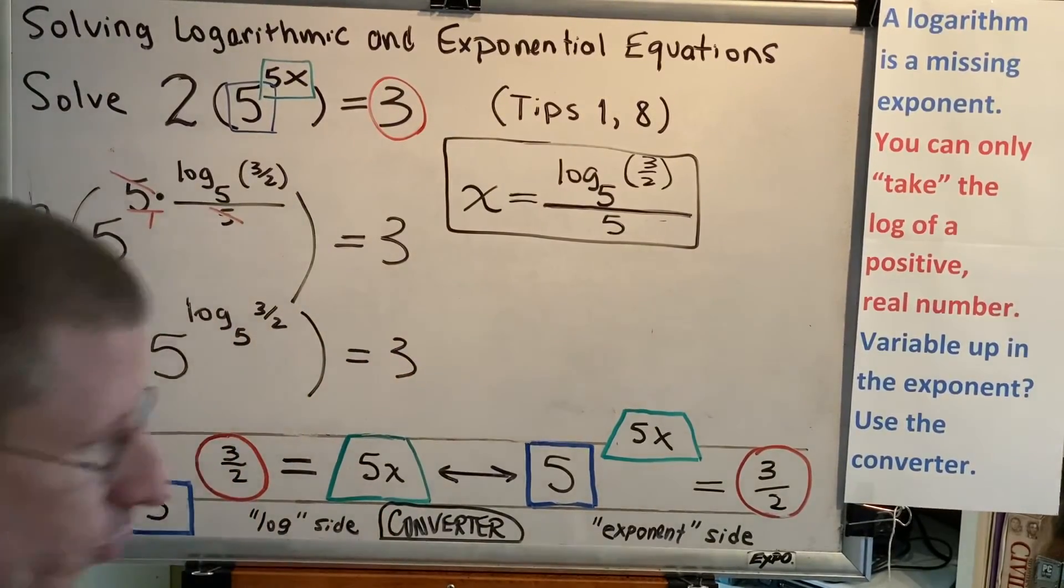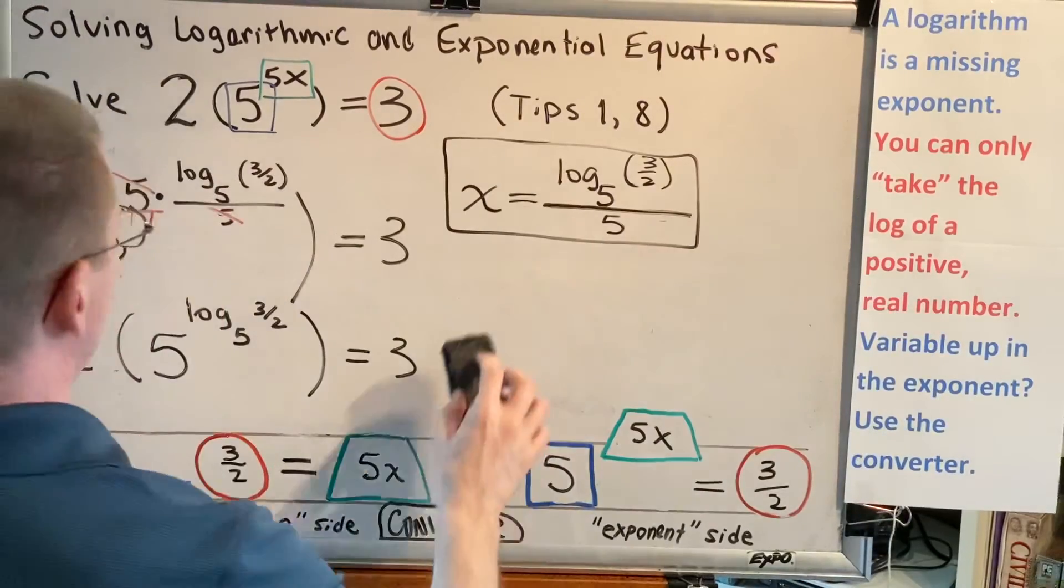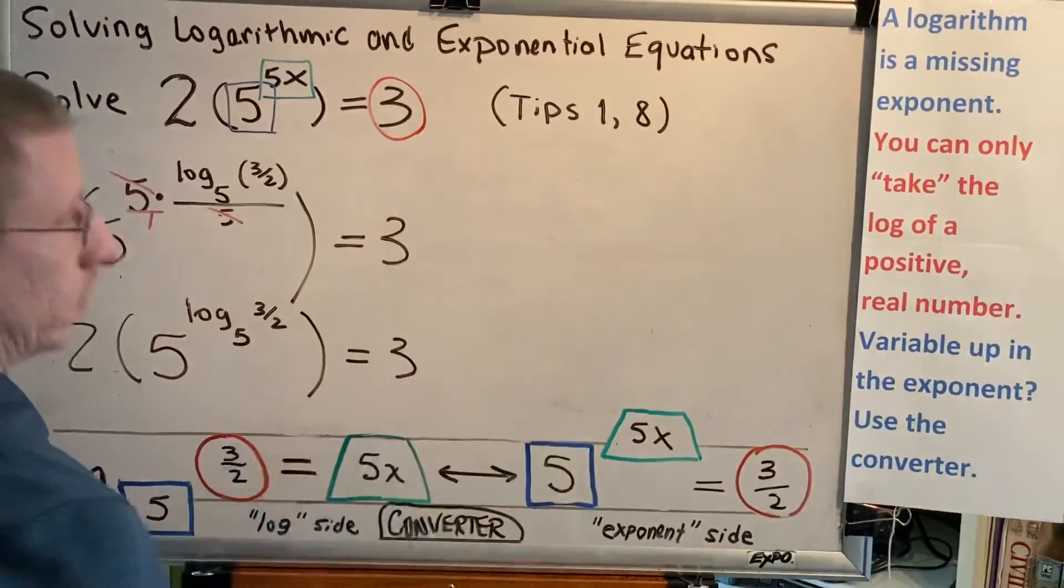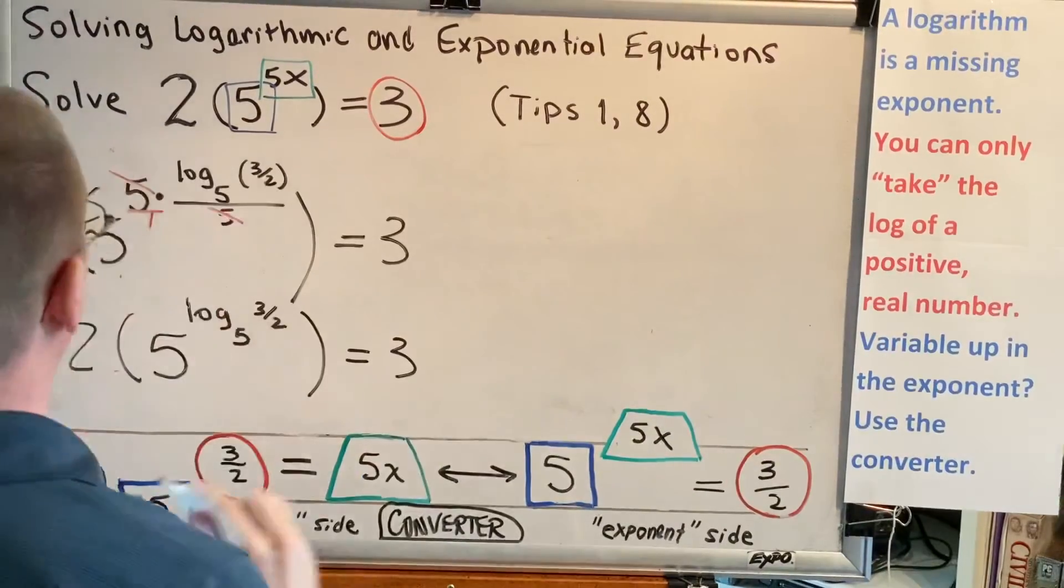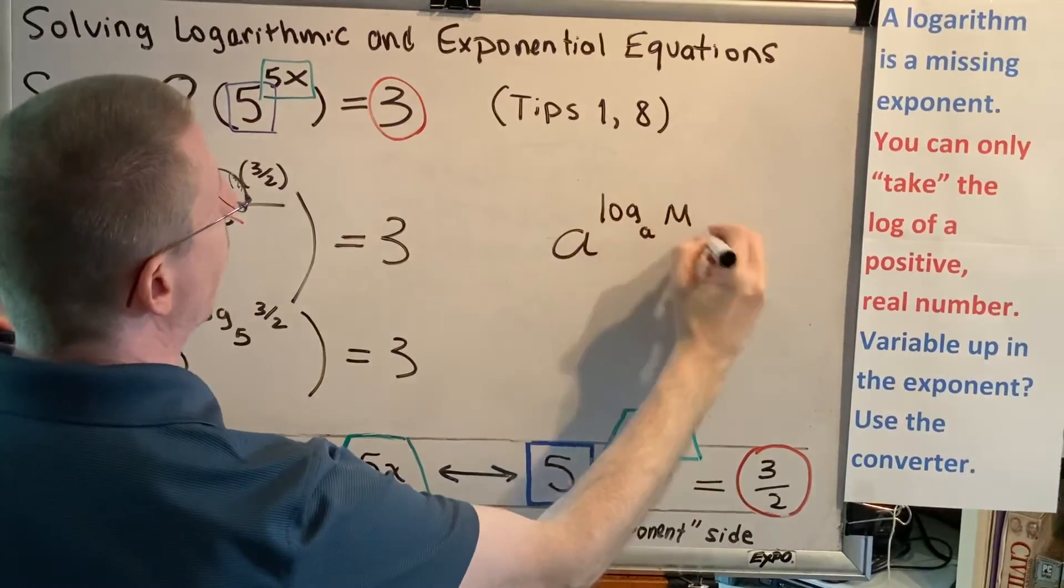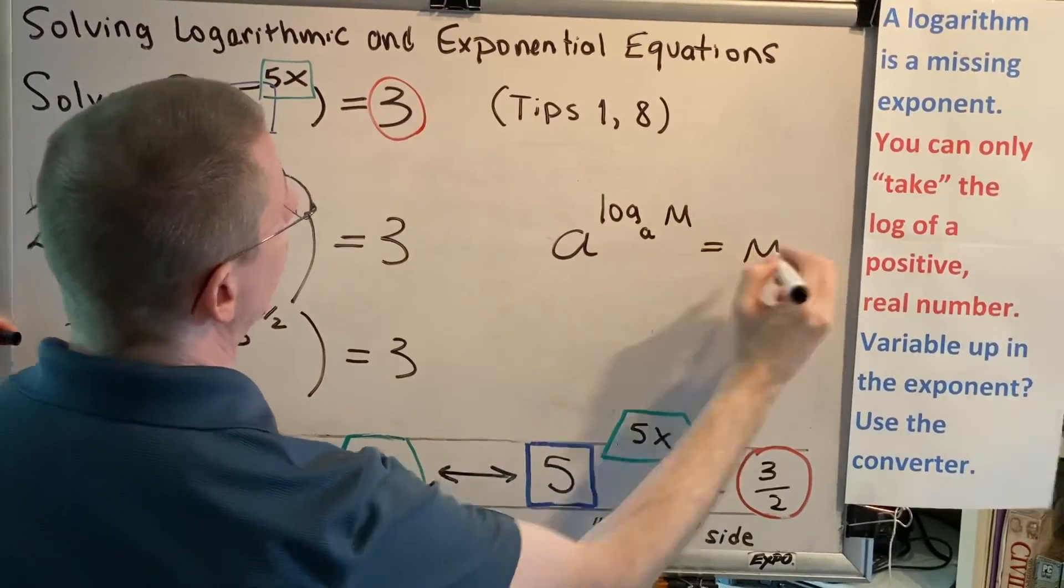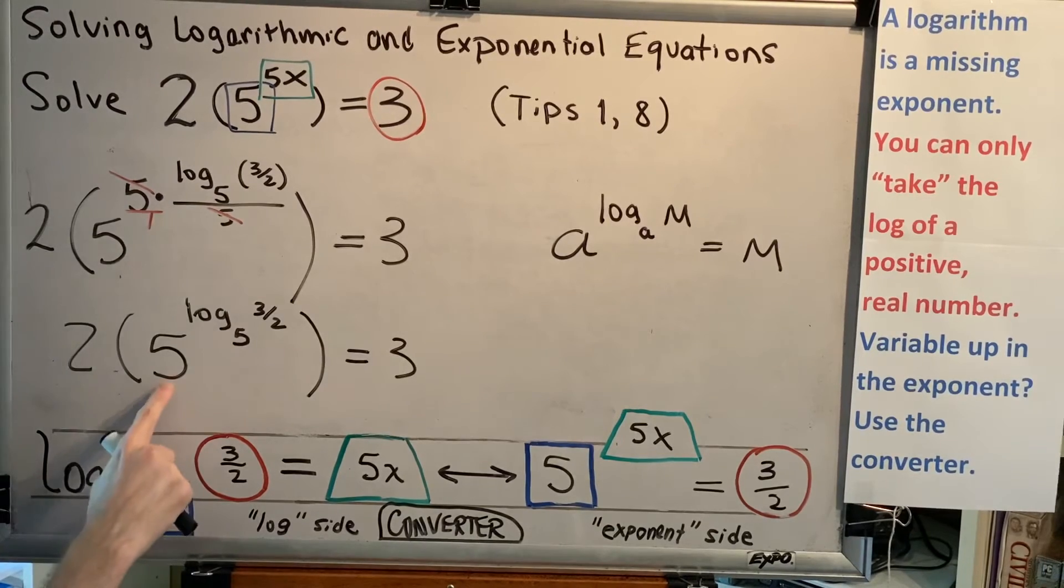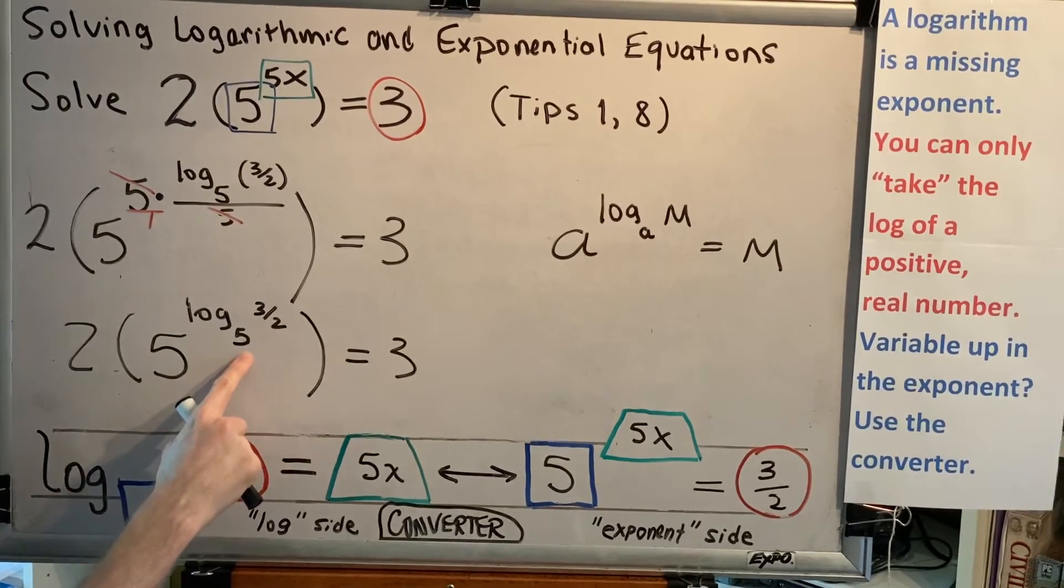Next, we're going to use one of our log rules. Let me make a little space here. We know that a raised to the log base a of m equals m. And that is exactly what's going on in this particular situation. This base and this base match.